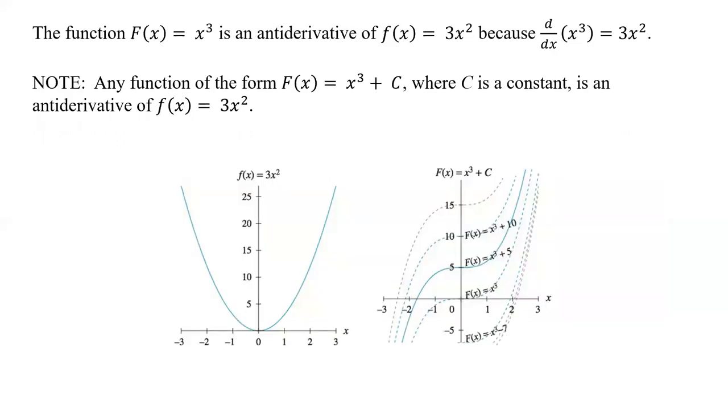All right, so this is an example. So the function F(x) equals x to the cube, x to the third, is right here. Actually, that's the anti-derivative of f(x), which is what we have here. Sorry, so that's the anti-derivative, and so our function F, capital F(x), is the anti-derivative of this one.